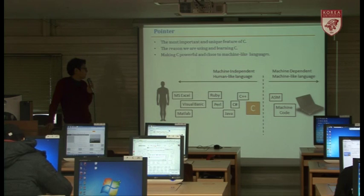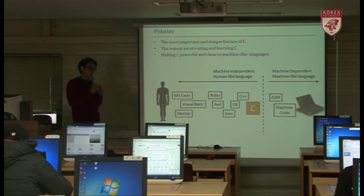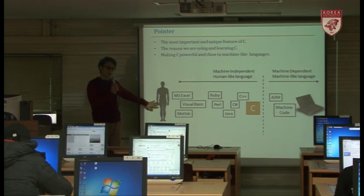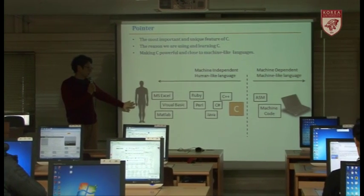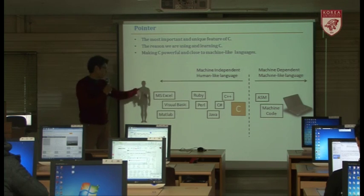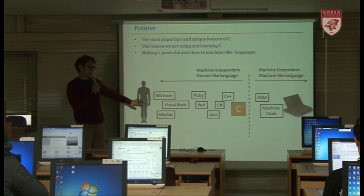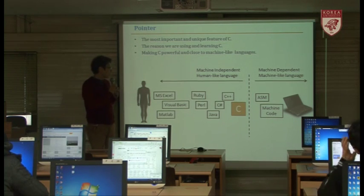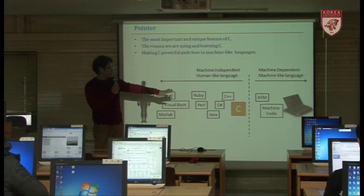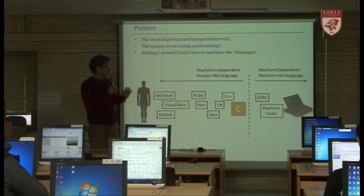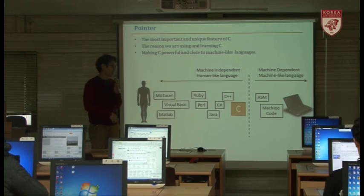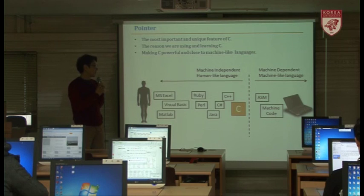You might remember this figure I showed in the very first class of this C programming course. There are a lot of languages. Some languages are more close to the human side — closer to natural human language. However, some languages are very close to the machine side. For example, machine code like 01010101 — humans can interpret that code, but it is very difficult. Machine is very easy to understand that 0101 type of machine code.